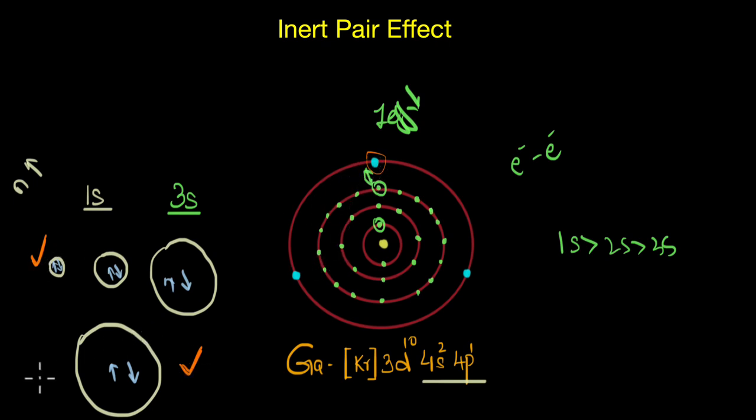And therefore the larger atomic size orbitals cannot effectively repel or shield the valence electrons effectively. So this is why the correct order of shielding would be 1s greater than 2s greater than 3s greater than 4s and so on. And if you compare the orbitals, they would be s greater than p greater than d greater than f.